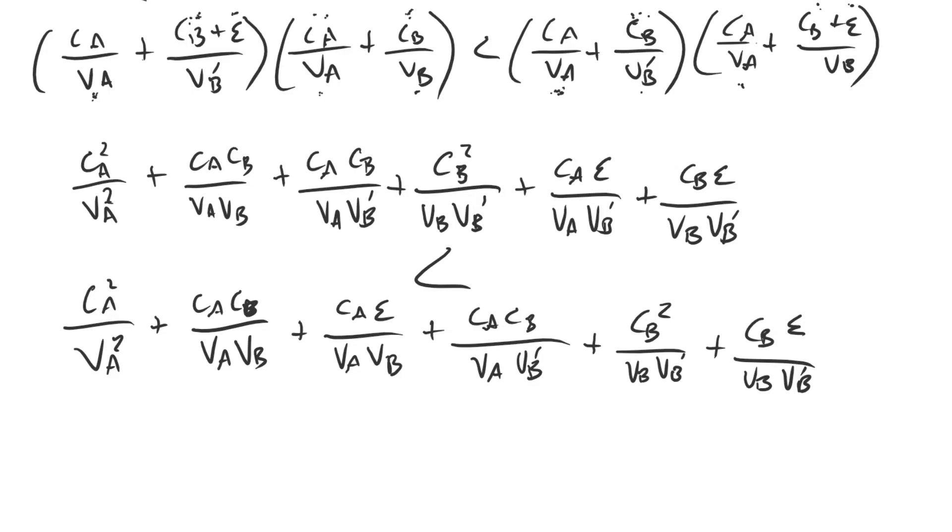Fortunately, let's take a look. The first term on each is CA squared divided by VA squared. So those things cancel. The second term is CA CB divided by VA VB. Those are the same. They cancel. If we look at the third term here and the fourth term here, we have CA CB divided by VA VB prime. So those things cancel. Maybe the fourth term here and the fifth term here, CB squared divided by VB VB prime. Those cancel. Is there anything else? Look at the last terms. We have a CB epsilon divided by VB VB prime. So those cancel.